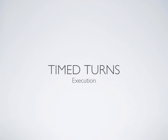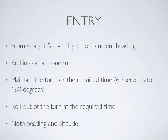Now that you understand the theory, let's talk about execution. Spend significant time thinking about how you will enter and exit this maneuver before you get in the plane, because the execution is quite messy if you're not mentally prepared. Before starting, ensure your wings are straight and level so your compass is reliable, then read your current heading. Calculate how much time your turn will take, roll into a rate one turn, maintain it for the required time, then roll out. Maintain straight and level while you wait two or three seconds for the compass to settle, then note the heading and altitude.